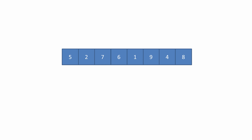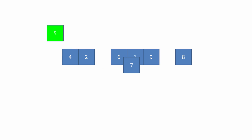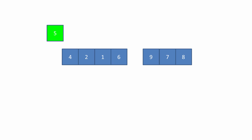The quicksort is a divide and conquer algorithm, the essence of which is to repeatedly partition an unordered list. A pivot is selected — in this case the value 5. Then all of the items smaller than the pivot are put on the left-hand side, and all of the items larger than the pivot are put on the right-hand side.